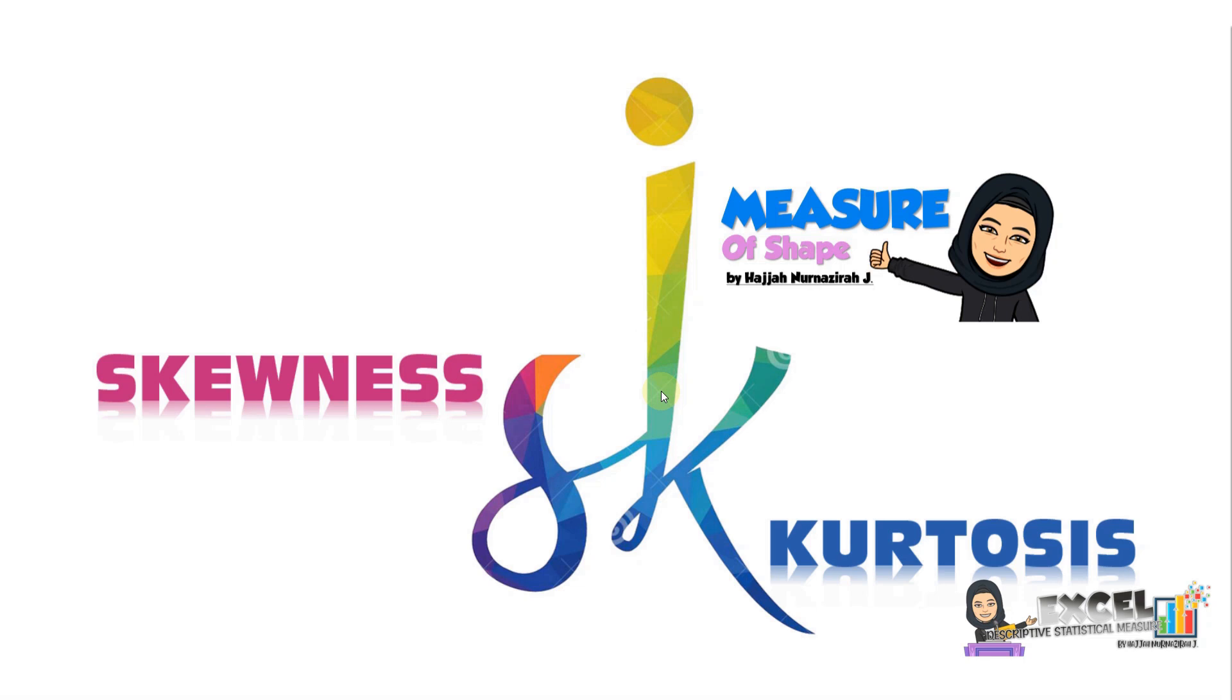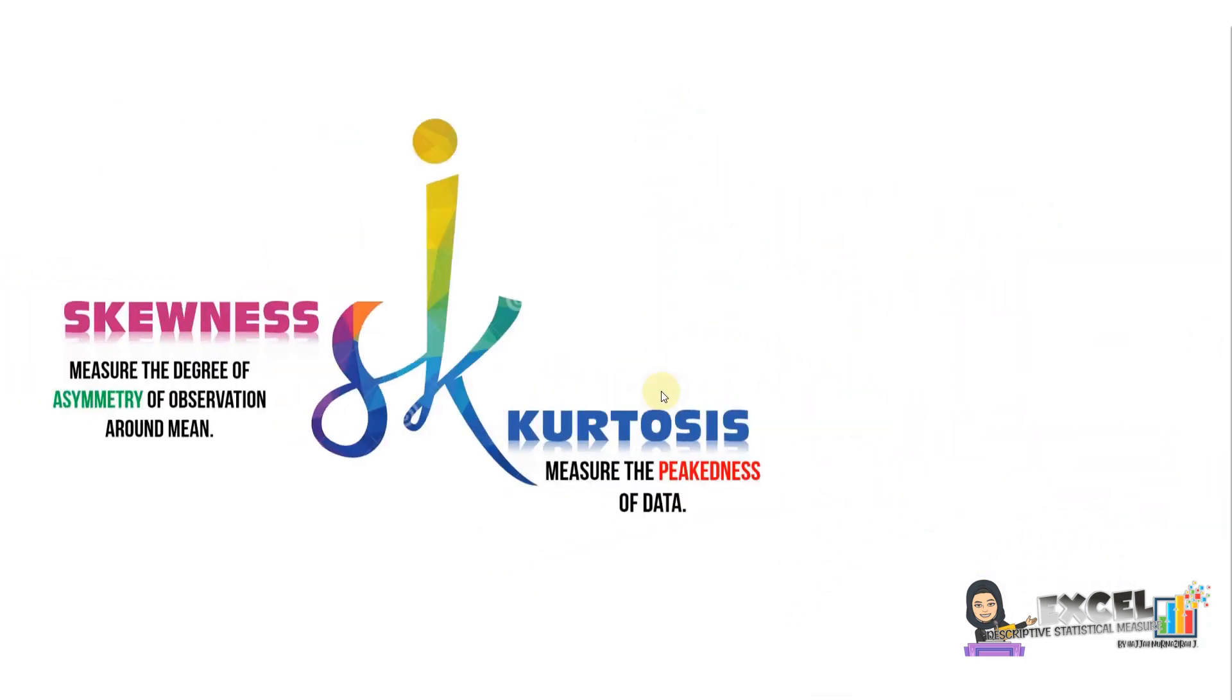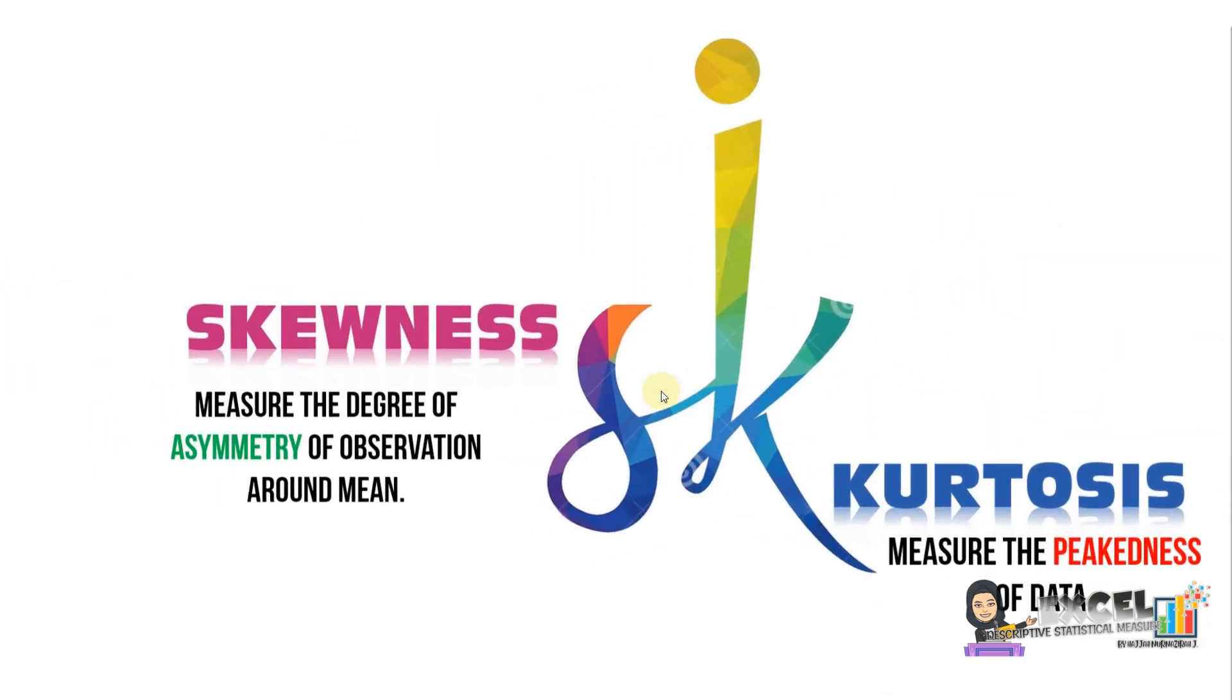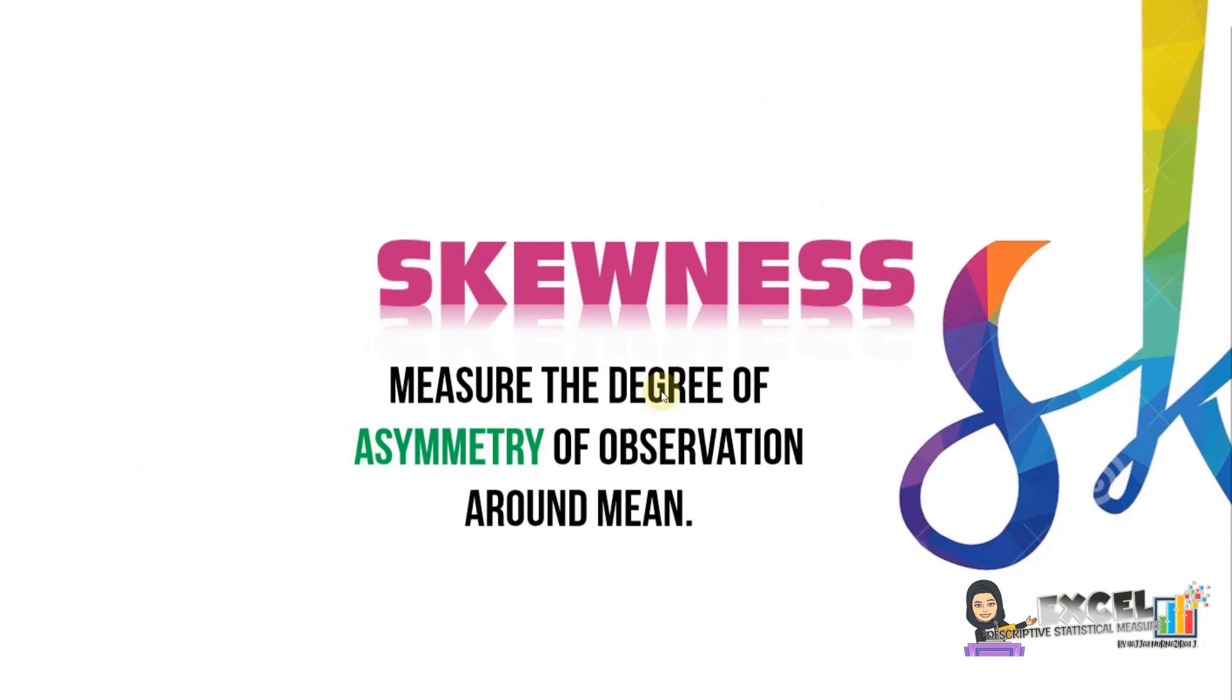In this topic, we will look at measures of shape through skewness and kurtosis. What is skewness? Skewness refers to the measure of the degree of asymmetry of observations around the mean, which means we want to see the overall shape of our data and its curve.